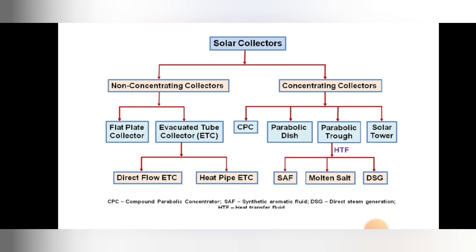In today's lecture we will move towards concentrating solar thermal collectors. As per the name, concentrating solar thermal collectors directly receive solar energy, concentrate it, and use it to generate electrical energy. There are basically four types of concentrating solar collectors. The first one is CPC — Compound Parabolic Concentrator. We are going to see in detail how the CPC looks and how it works.